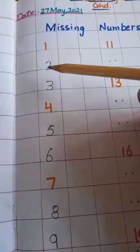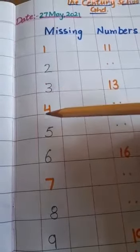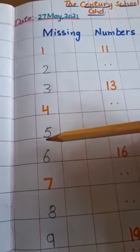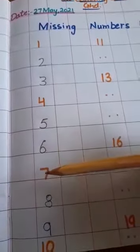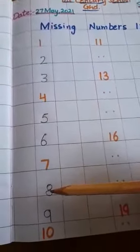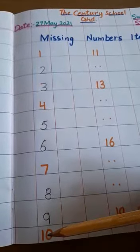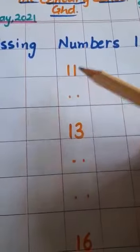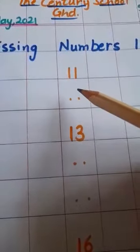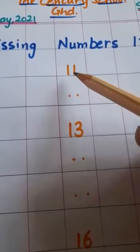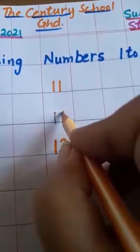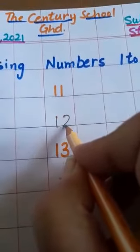1, 2, 3, 4, 5, 6, 7, 8, 9, 10. Next line starts with 11. What comes after 11? Write down 12.